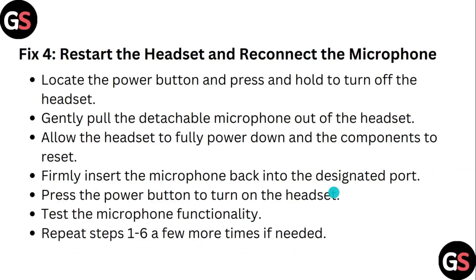Step 4: Restart the headset and reconnect the microphone. Locate the power button and press and hold to turn off the headset. Gently pull the detachable microphone out of the headset. Allow the headset to fully power down and the components to reset. Firmly insert the microphone back into the designated port. Press the power button to turn on the headset and test the microphone functionality. Repeat these steps a few more times if needed.